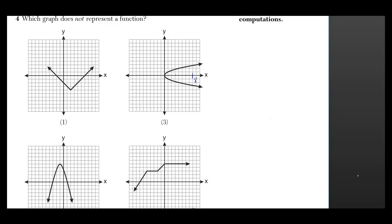If you want to find out if something represents a function or not, you can see if it passes the vertical line test. Now the vertical line test is where you find some sort of x coordinate that you draw a vertical line through.